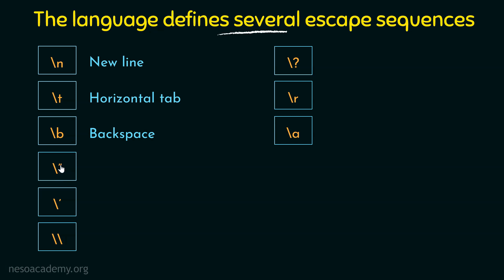Next we have backslash double quotation marks. We already know that double quotation marks have a special meaning in C++ syntax. If you want to print a double quotation mark, you need to use the escape sequence — give a backslash before the double quotation marks. The compiler then understands this is not part of the syntax but an actual double quote to print on screen. Similarly, for single quote, we can use backslash single quote mark, and it will print the single quote on the screen.